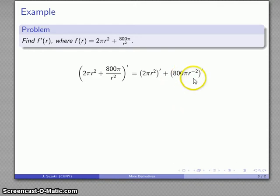Likewise 800 times pi, well pi is a real number somewhere between 1 and 10, and so 800 times pi is also going to be just a real number. So this constant times r to power minus 2, the derivative can be found by multiplying constant by the derivative.